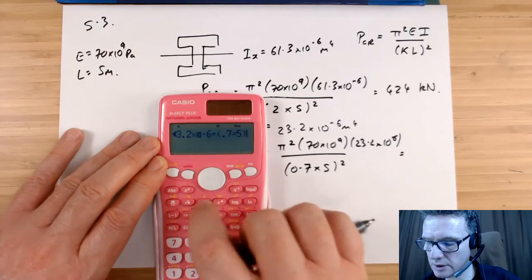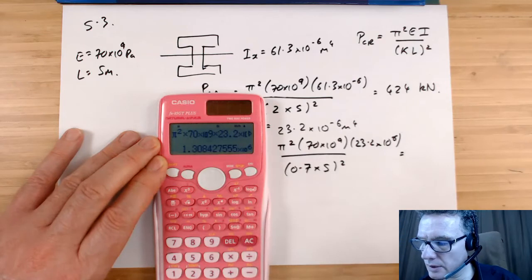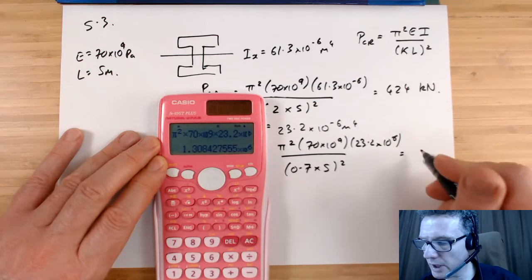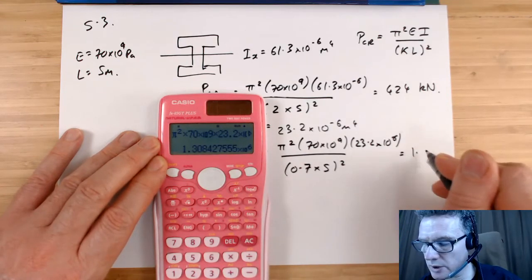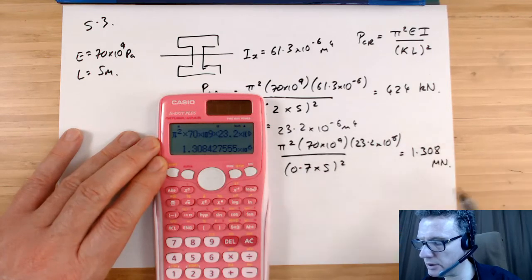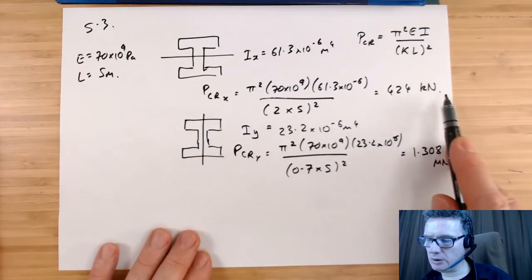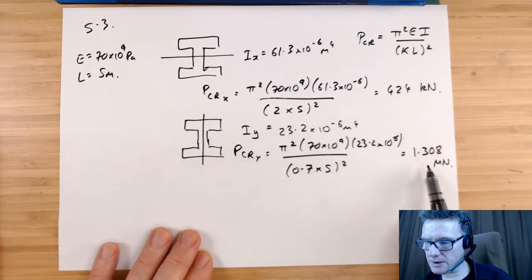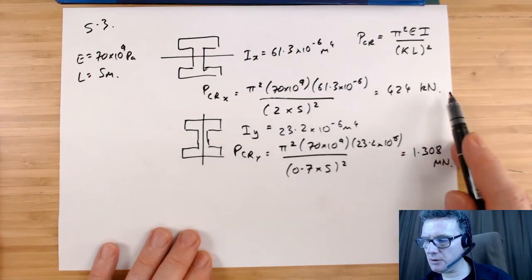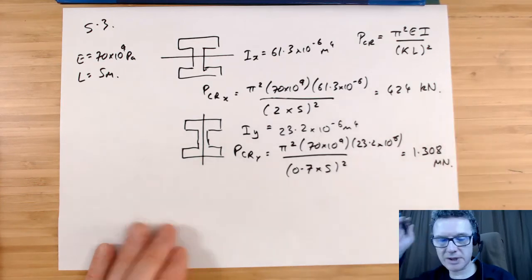So 1.308 meganewtons. So this case is more likely to buckle than this case. So the case that you'd think would be more likely to be secure is the case where it's actually buckling.